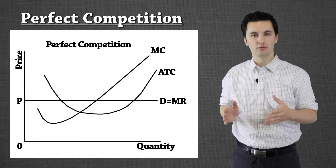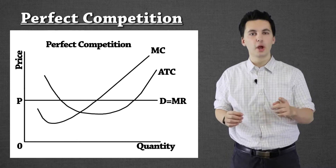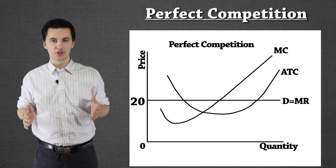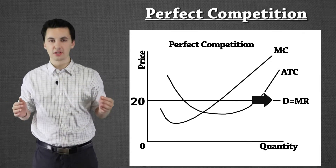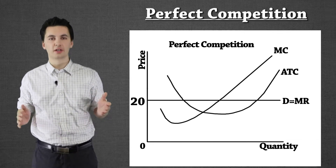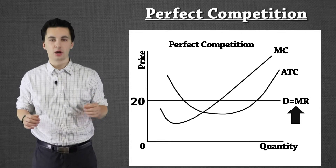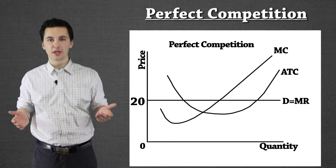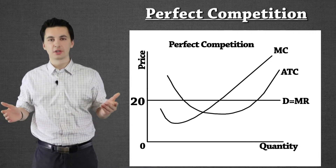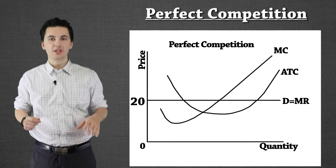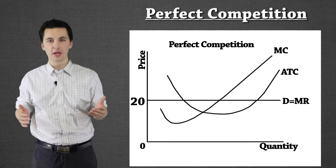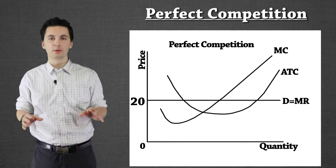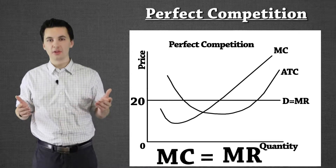Let's zoom in on the individual firm chart on the right and talk about what's happening and where we figure out how much we should produce. This chart shows an individual firm in perfect competition. As this line goes straight across, that's showing perfectly elastic demand — we are set at twenty dollars. This is also going to be our MR, our marginal revenue. Every time we sell one additional unit we're going to be getting another twenty dollars, so demand and MR are the same here. The next thing we have to figure out is where should we actually produce — this is our profit maximization point, which we find by finding where MC and MR connect, where they equal each other.